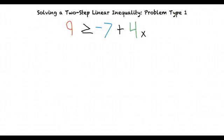That's right! So our first step is to add 7 to both sides, which then gets us the result 16 greater than or equal to 4x.